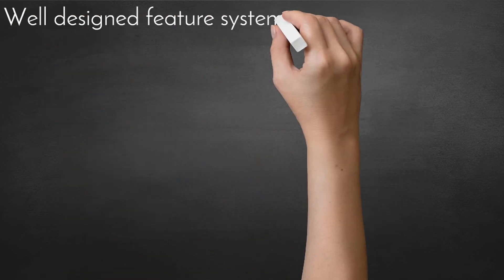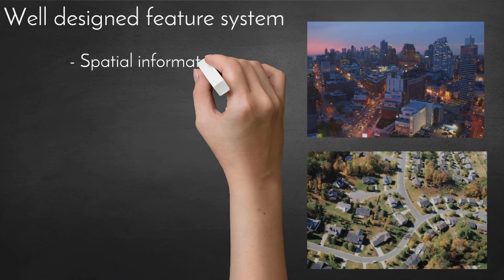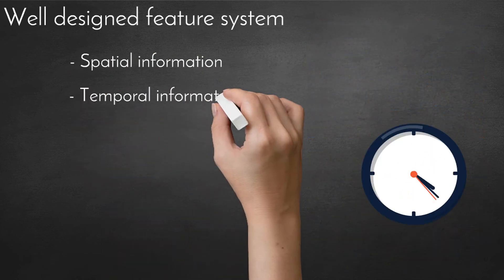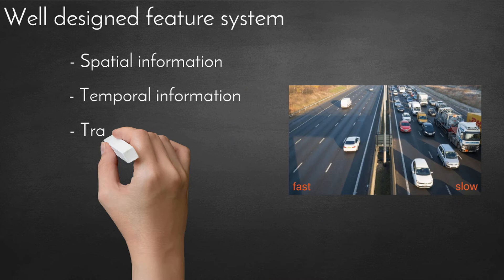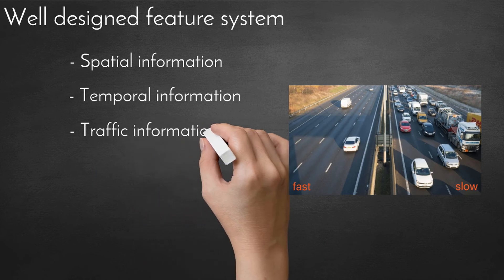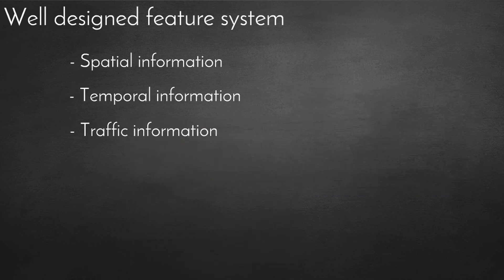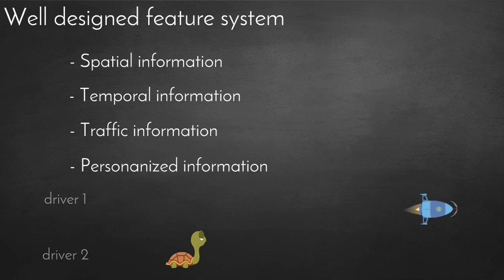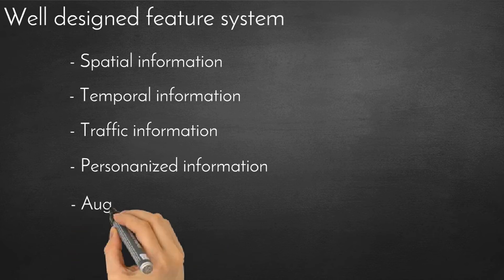Prediction of ETA incorporates many aspects. We systematically build rich features including the following types: spatial information, temporal information, traffic information, personalized information, and augmented information.